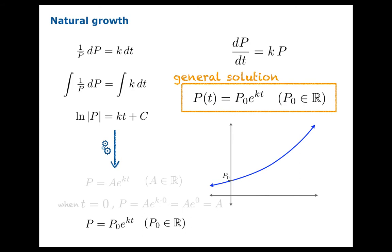And then our general solution becomes p of t equals p0 e to the kt. And remember, the role that p0 plays is actually the y-intercept of your solution. This can be very handy when you're solving initial value problems because you recognize what that constant really means.